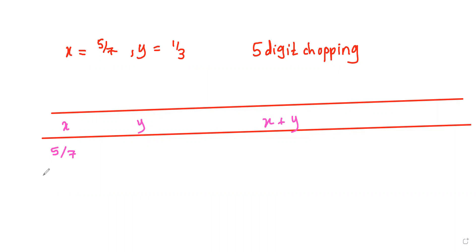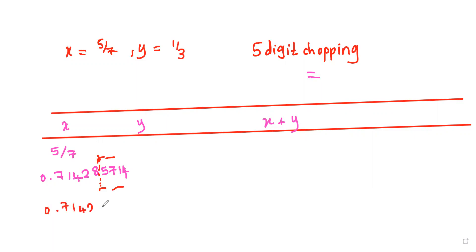...our calculator is going to return the value 0.714285714. However, since this calculator only uses five-digit chopping, it will chop down after the fifth digit, storing only 0.71428. Since it's using five-digit chopping, it cuts down after that fifth digit and stores that in the calculator — it doesn't have enough capacity to store the whole digits.